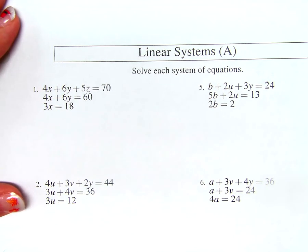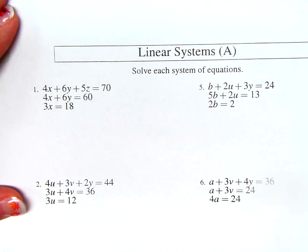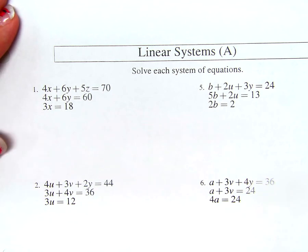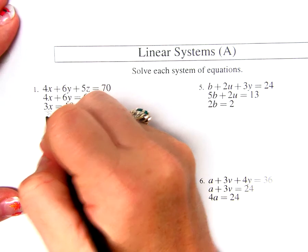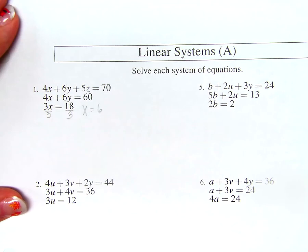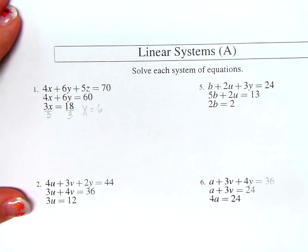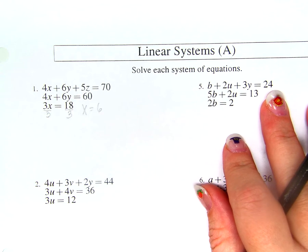What do you notice about the second equation? It only has two. What do you notice about the last equation? Any idea what we'll do first? Like actually solve it, right? Because there's only one variable, so we can solve that. If I divide both sides by three, X equals six. So in one step, I've already solved for one of my variables.